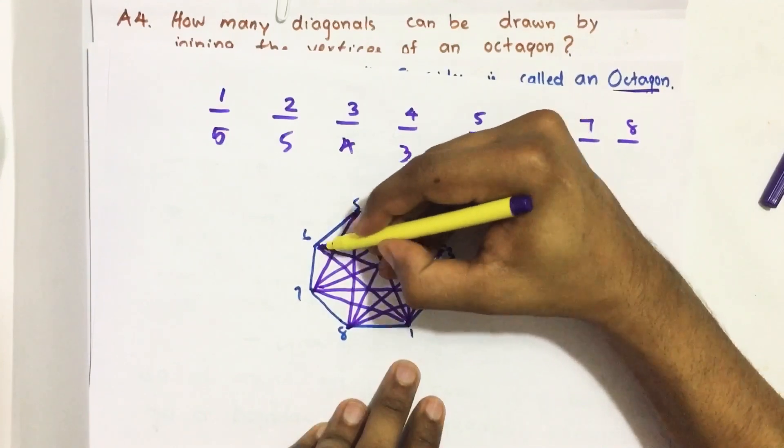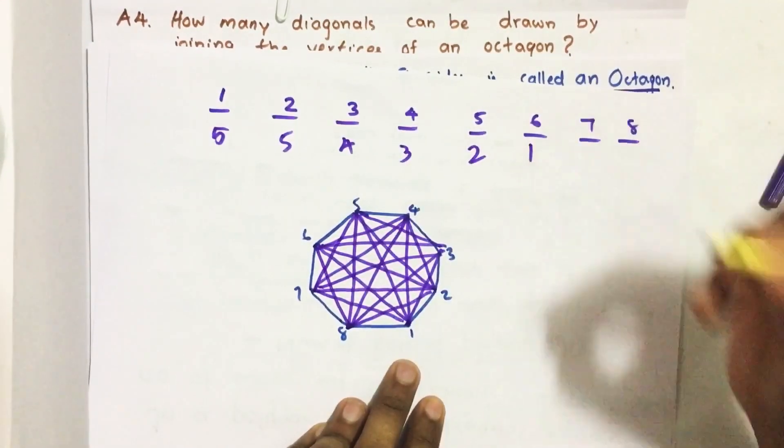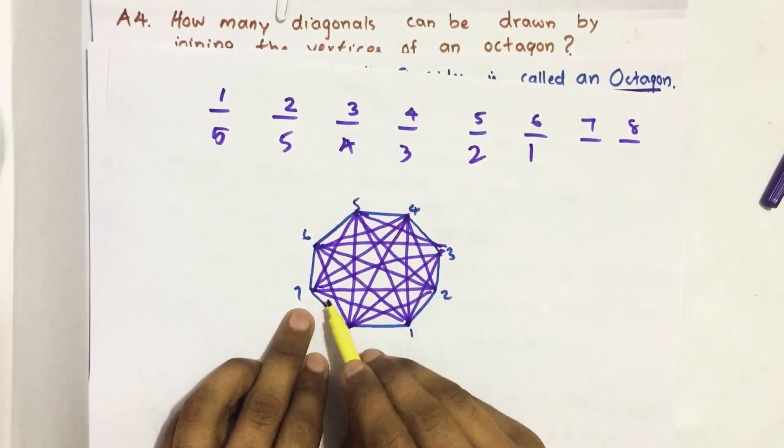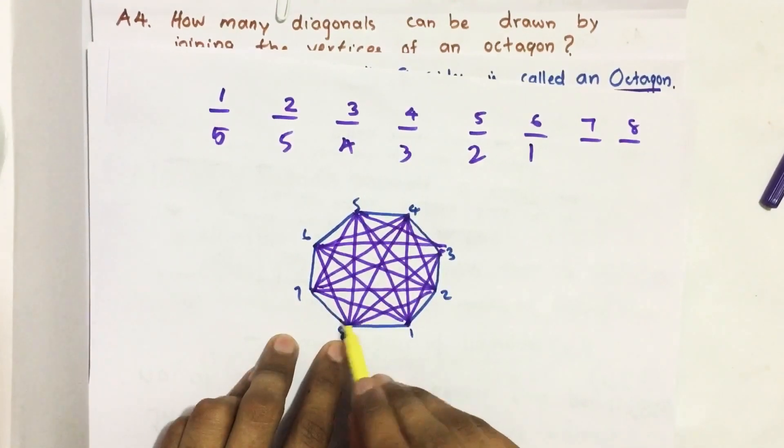Here already 4 are drawn. The remaining 1 I have drawn now. Then from vertex 7, all 5 are already drawn. From vertex 8, all 5 diagonals are already drawn.